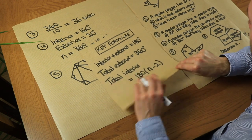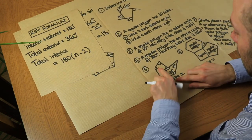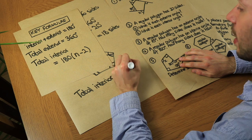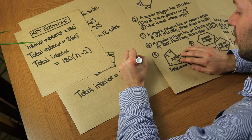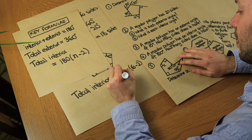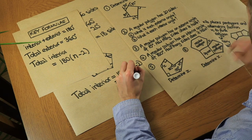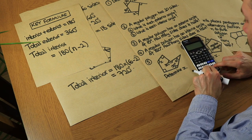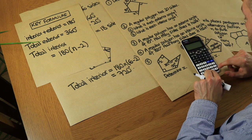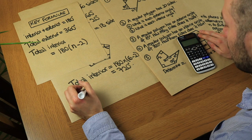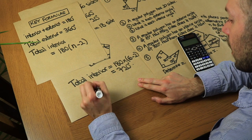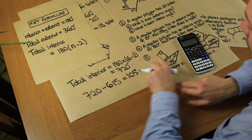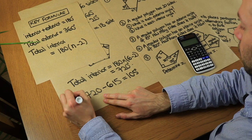Applying that formula to our hexagon: total interior angle = (6 − 2) × 180 = 720 degrees. Adding the known interior angles: 90 + 90 + 265 + 130 + 40 = 615 degrees. Therefore, the missing angle X = 720 − 615 = 105 degrees.